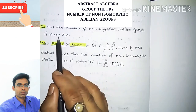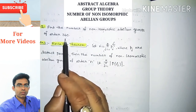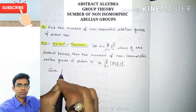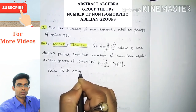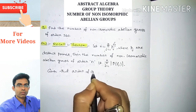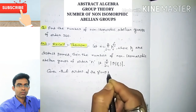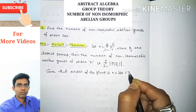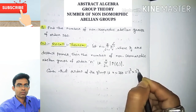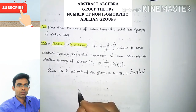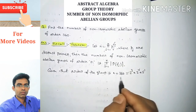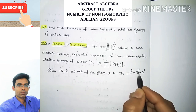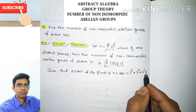Coming to the problem, we have to find the number of non-isomorphic abelian groups of order 360. Given that n equals 360, and 360 can be written as 2 cubed times 3 squared times 5 to the power 1. So we need to find the number of partitions of these powers: partitions of 3, partitions of 2, and partitions of 1.